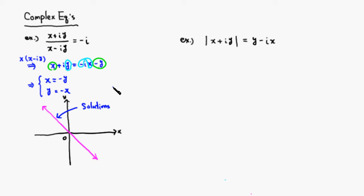How about the following equation: |x + iy| = y - ix. The first thing we should notice is that the absolute value is always a real number, so the left-hand side is always real. Which means the right-hand side has to be purely real, so the imaginary part, which is -x, has to equal 0.